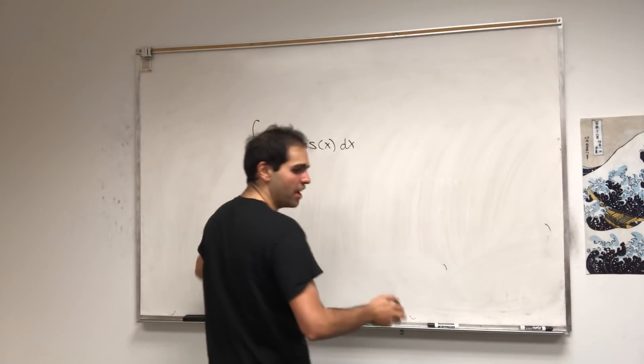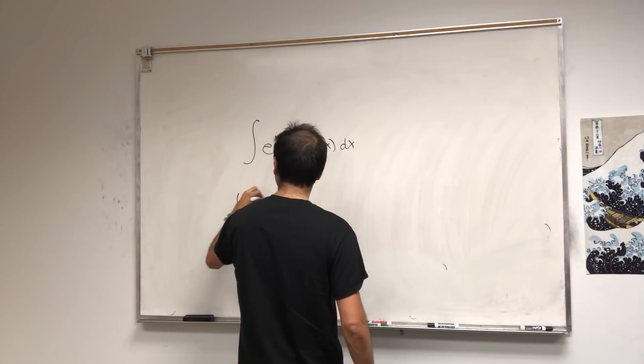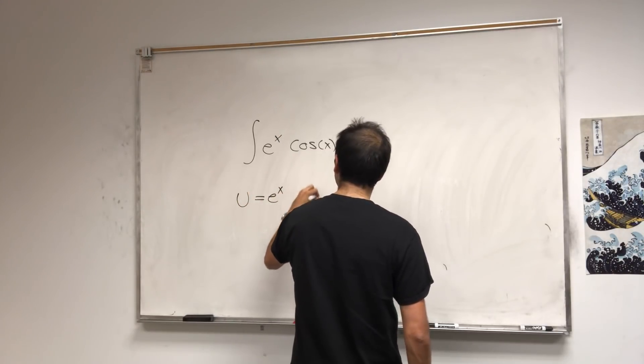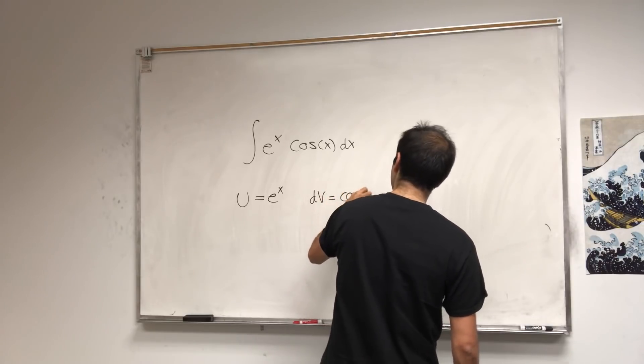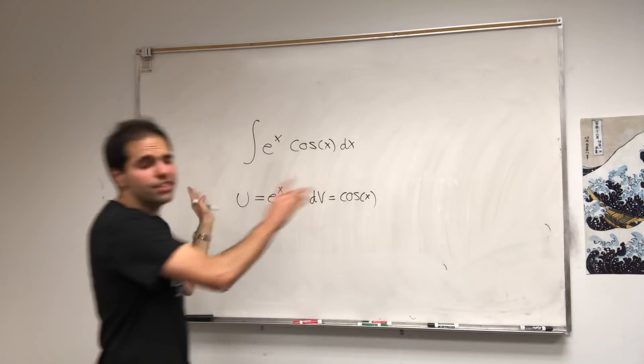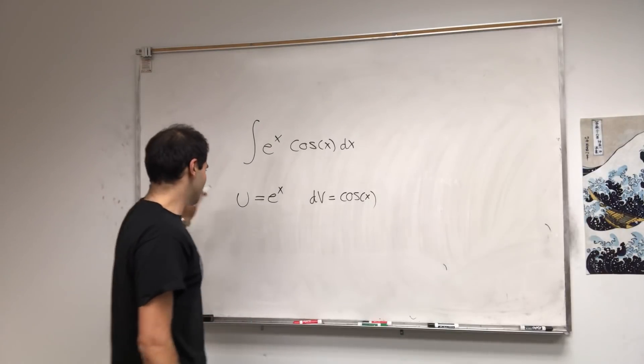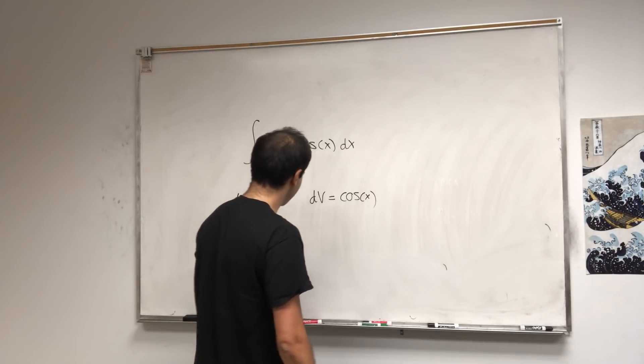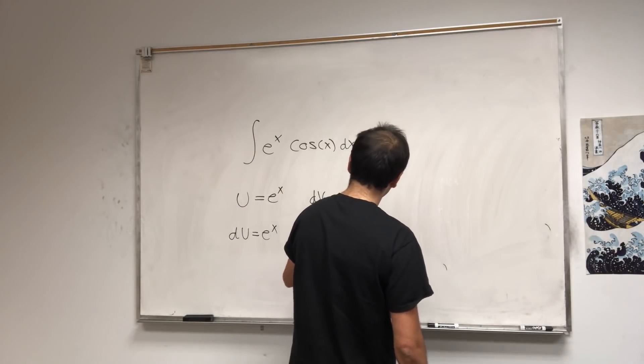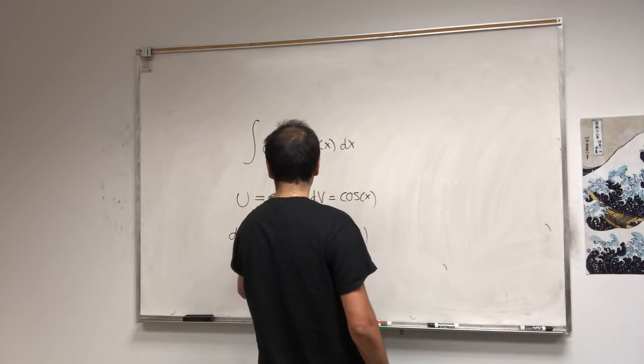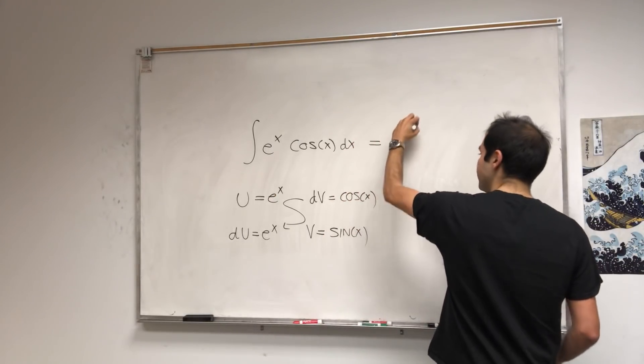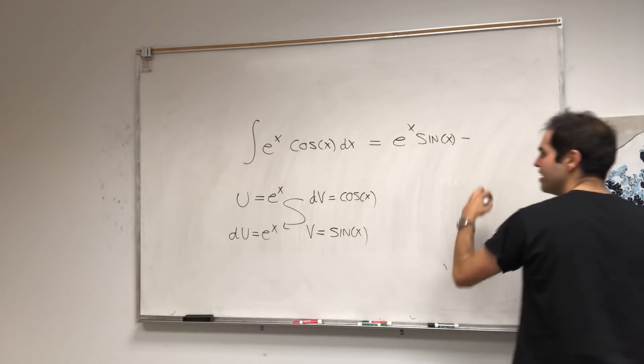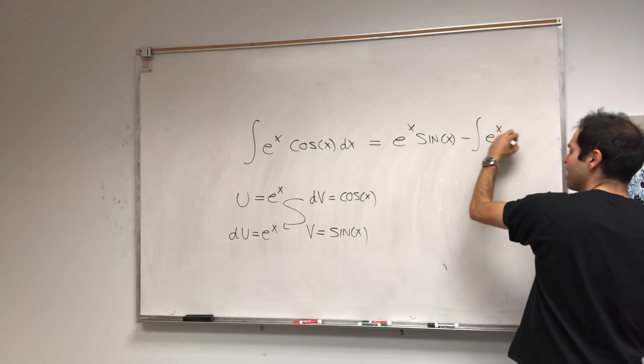So here's the standard calculus way. Just integrate by parts. So u is e^x, dv is cos(x), then du is e^x, and v is sin(x). Then you go through the zigzag motion. So this becomes e^x sin(x) minus integral of e^x sin(x).